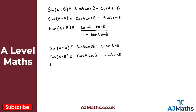Finally we have tan of A minus B, and we can express this as tan A minus tan B, divided by one plus tan A times tan B. Again, notice it's almost identical to tan of A plus B — the only difference being rather than a plus in the numerator we have a minus, and rather than a minus in the denominator we now have a plus.